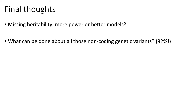Some final thoughts: first, is missing heritability a problem of power — do we need more people in our studies — or do we just need better models? Another point I really want to drive home is that most of the variants associated with complex traits and diseases in humans are in non-coding regions of the genome that are largely unannotated. One of the huge open questions in human genetics is: what are they doing? The answer is probably going to be found in large part by using many of the assays we talked about in class — from epigenomes, transcriptomes, and nuclear organization — to help fine-map variants and answer the question of what each of these potential variants actually does at the molecular level.